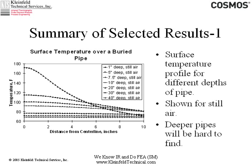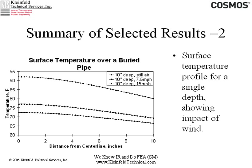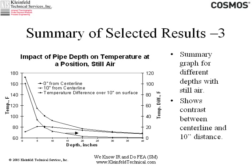Selected results: this is the surface temperature, all for still air at various depths. For the 1-inch depth, you get a very high center line temperature that drops off rapidly. As depth increases, the center line temperature goes down and the curve becomes flatter and flatter, to the point where you're not going to find it when it's deeper than 20 or 30 inches — these are the curves down at the bottom. Another result shows just a 10-inch depth looking at the effect of wind velocity, which affects the convective heat transfer coefficient on the surface of the ground. As the wind increases, the profile gets flatter — so the higher the wind velocity, the more difficult it's going to be to find it.